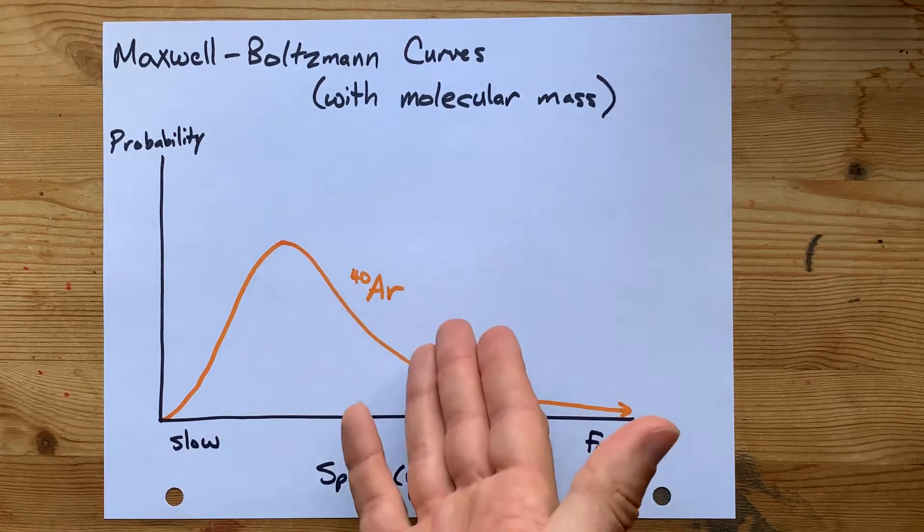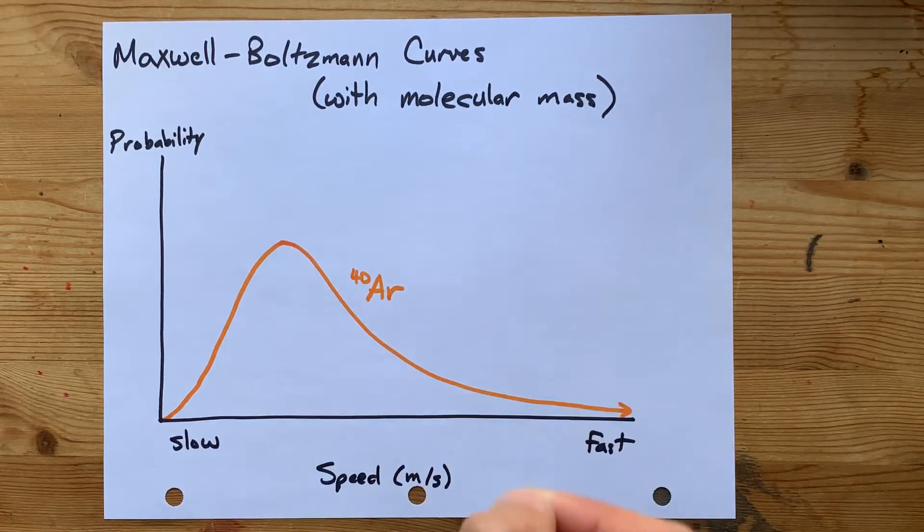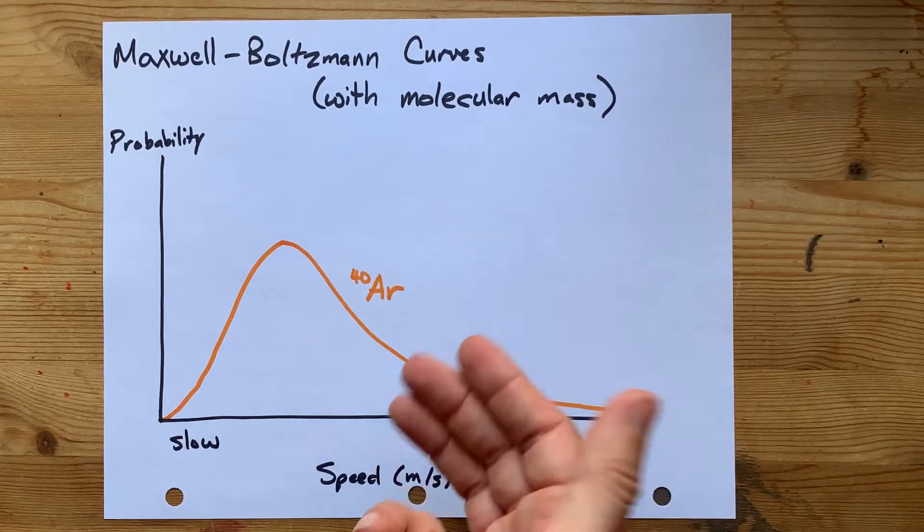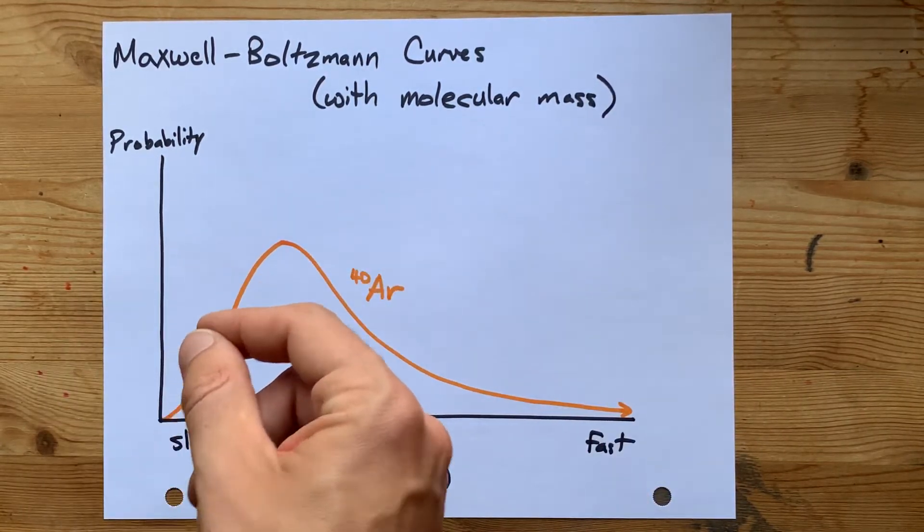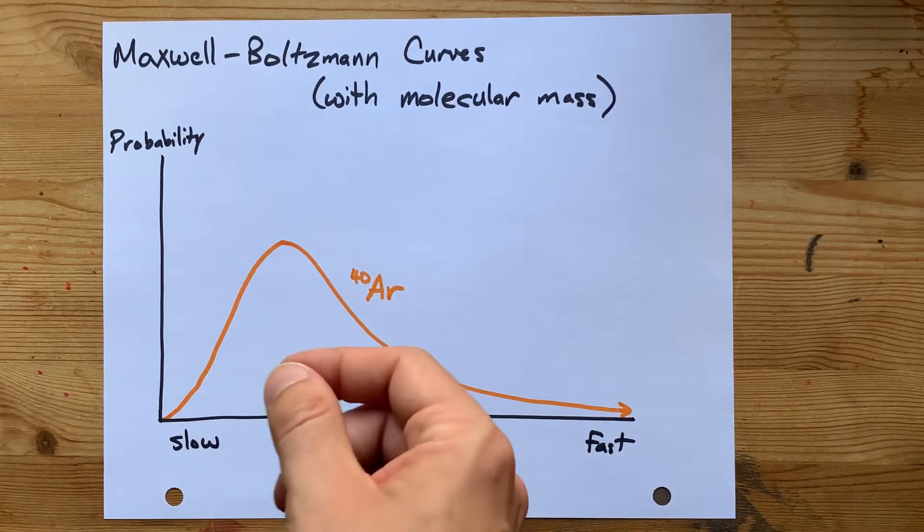How is this affected by heavier particles? Well, the heavier a particle, the less kinetic energy can affect the speed.